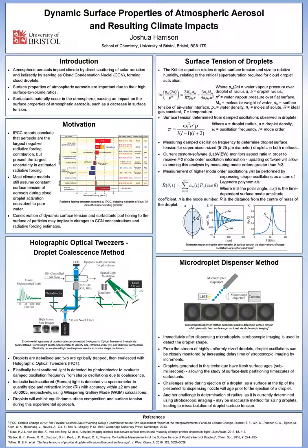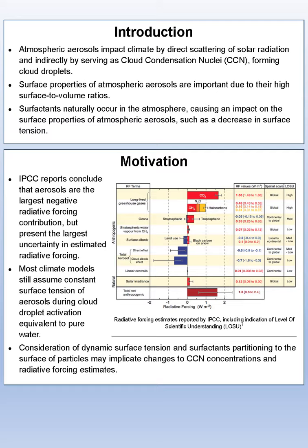To provide background, the IPCC report concludes that aerosols are the largest negative radiative forcing contribution, but present the largest uncertainty in these estimates. Atmospheric aerosols affect the climate either by direct scattering or absorption of solar radiation, as well as indirectly by serving as cloud condensation nuclei forming cloud droplets.